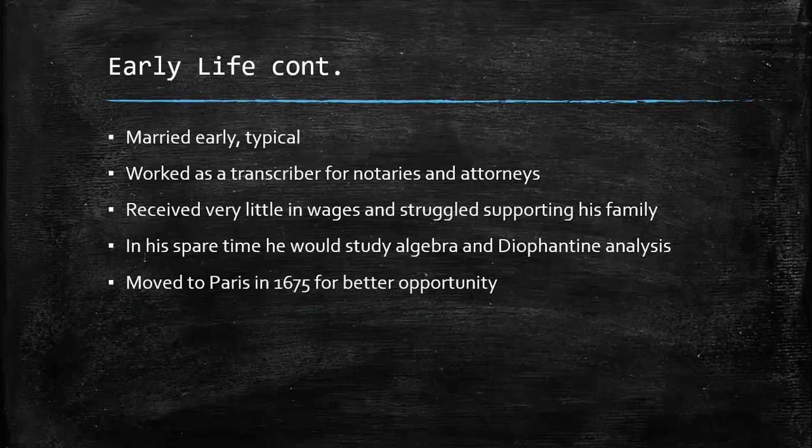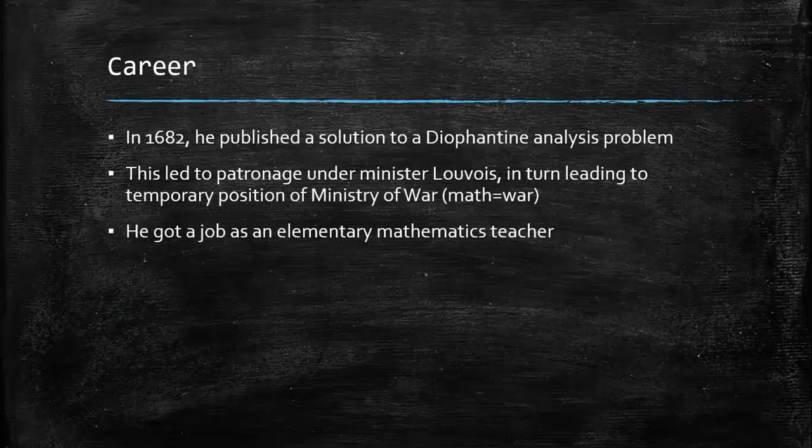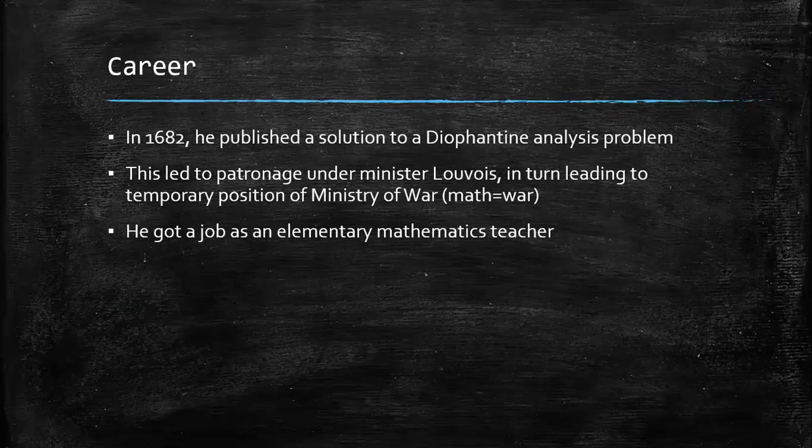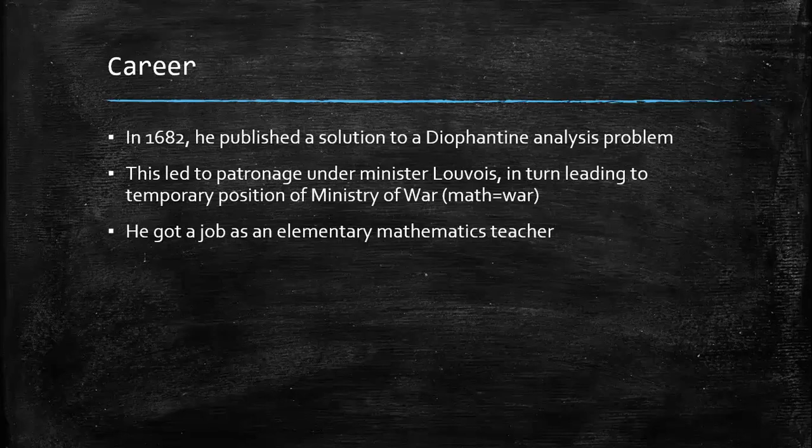Eventually, he moved away from his home in Ambert to live in Paris, presumably to advance his career in 1675. In the start of his career, he caught his big break in 1682 when he published a solution to a difficult and unsolved Diophantine analysis problem. From this achievement spawned public recognition, which led to patronage under Minister Louvois, French Secretary of State for War, as well as his short-lived position as Ministry of War. More importantly, it also landed him a job as an elementary mathematics teacher, which finally formally introduced him as an actual mathematician.